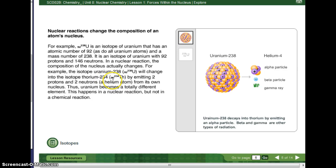Thus, uranium becomes a totally different element. This happens in a nuclear reaction, but not in a chemical reaction. So, chemical reactions, remember, we spent a couple weeks balancing chemical equations where you have to have the same number of each element before and after. Not true for nuclear reactions. Nuclear reactions, you are changing stuff into a different element.